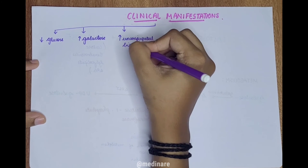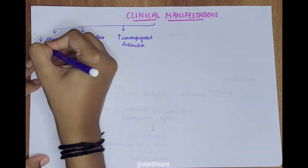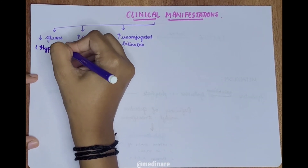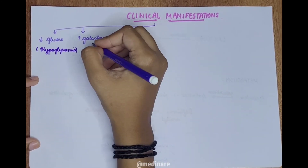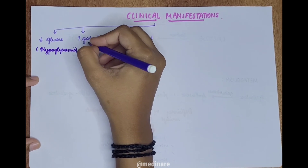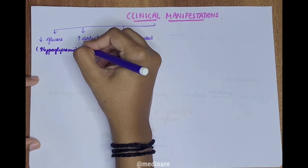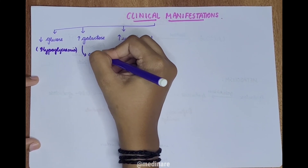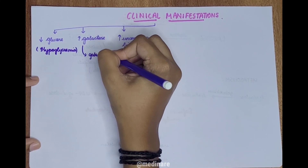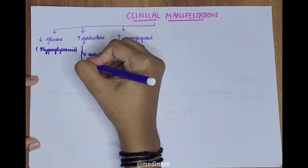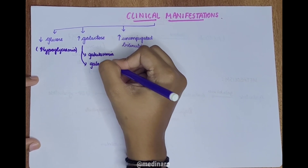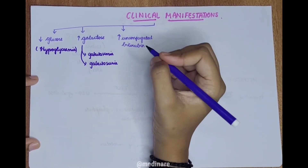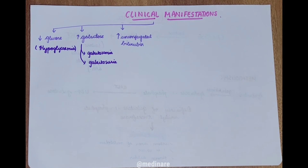Decreased glucose level leads to hypoglycemia, whereas elevated galactose in the blood causes galactosemia. Some of this galactose is partially excreted in the urine, leading to galactosuria.